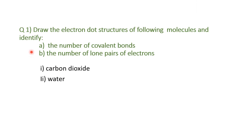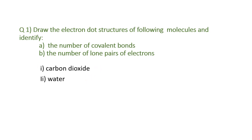Here is a question for you children. Draw the electron dot structure of the following molecules and identify: A) the number of covalent bonds, and B) the number of lone pairs of electrons. The molecules are carbon dioxide and water. Thank you.